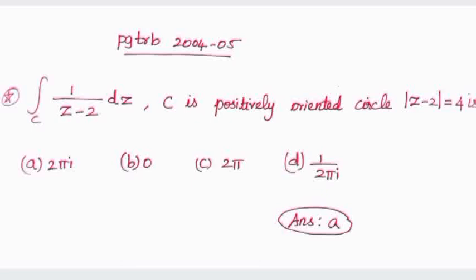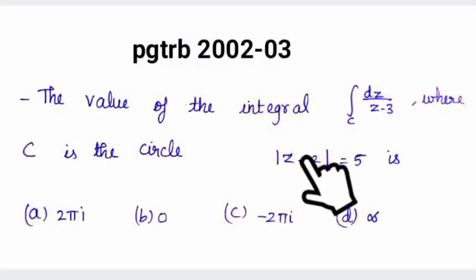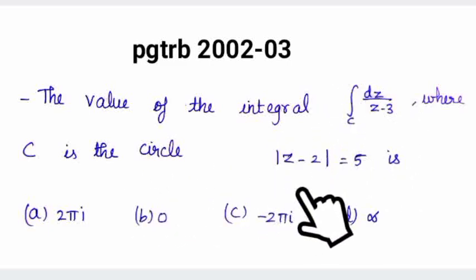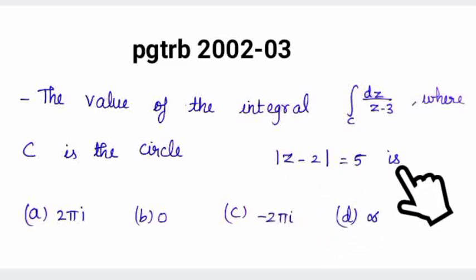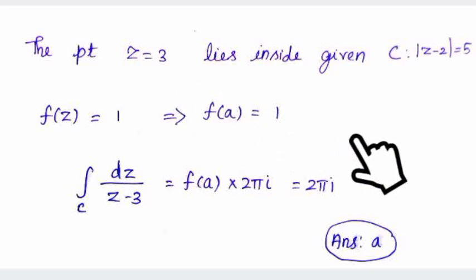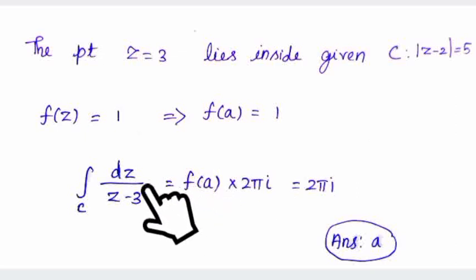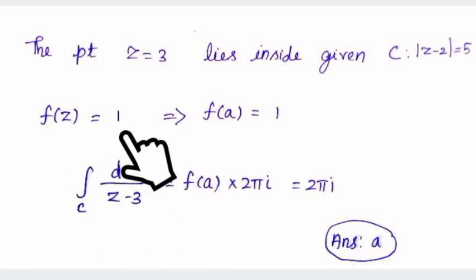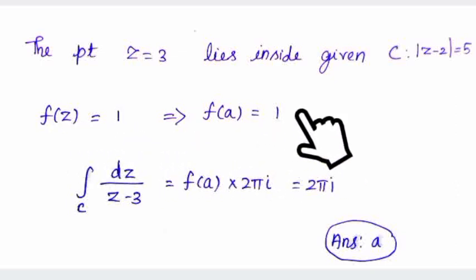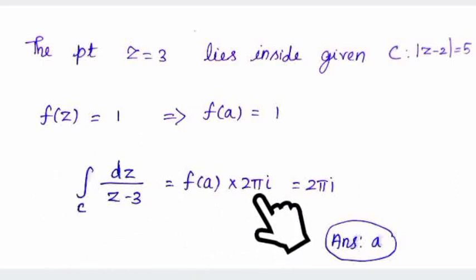The second question is PGTRB 2002 and 2003. The value of the integral over the circle |z − 2| = 5 with integrand 1/(z − 3) is asked. The point z = 3: check if |3 − 2| = 1 is less than 5, so z = 3 is inside the circle. Here f(z) = 1, so f(a) = 1. The integral value is f(a) · 2πi = 1 · 2πi = 2πi. The answer is option A.